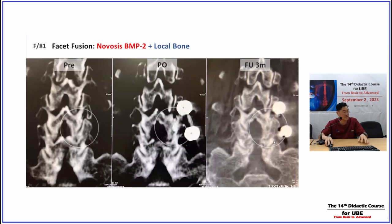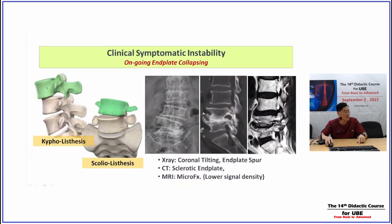The clinical symptom satisfaction in the early stage comes from the result of the decompression — not the fusion. So full decompression — foraminal decompression — is more important than the fusion technique. The instrumented fusion is only an augmentation to prevent further collapsing of the segment. So in endoscopic surgery, the fusion indication is clinical symptomatic instability rather than radiographic observational instability.